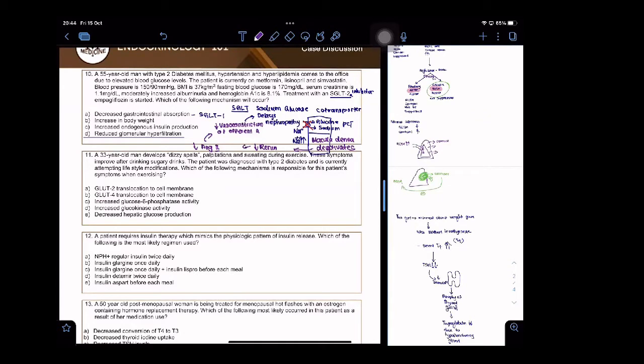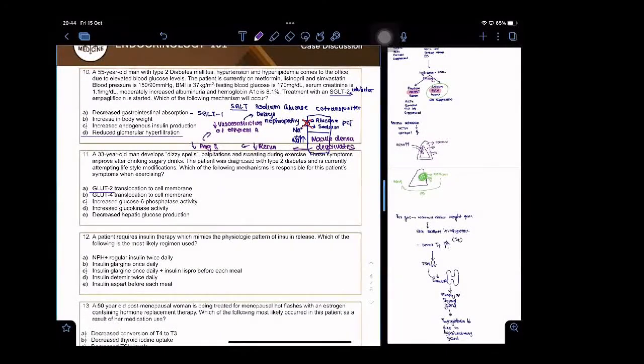Can someone tell me where do you get the GLUT2 transporters? Liver and? It's a switch kind of thing. It can turn on to either side. Liver and pancreas. GLUT2 is found in the liver and pancreas.